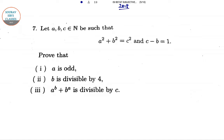The first question is that A, B, C belongs to natural numbers such that A squared plus B squared equals C squared and C minus B equals 1. We have to prove that A is odd, B is divisible by 4, and A to the power B plus B to the power A is divisible by C.